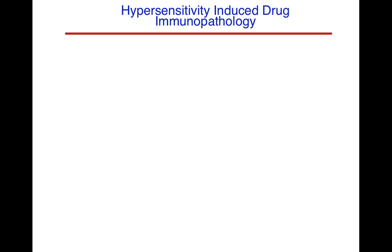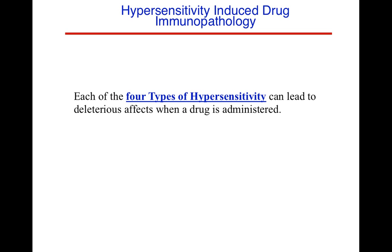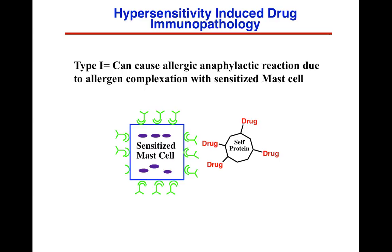Next, let's look at how these hypersensitivity reactions induce drug immunopathologies. We've seen natural allergens, but let's put a better definition on what happens with drugs. All four types of hypersensitivity reactions can lead to deleterious effects or allergic reactions to a drug. Type 1 is caused by an allergic anaphylactic reaction due to allergen complexation with primed mast cells. If you have a self-protein with a drug bound to it, and it's close enough in configuration, this can then bind to antibodies on the mast cell through the drug.